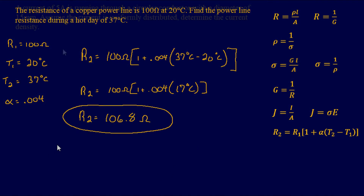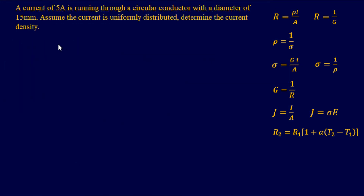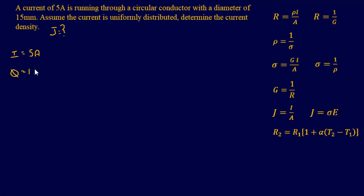For this last problem, there is a current of 5 amps flowing through a circular conductor with a diameter of 15 millimeters. Assume the current is uniformly distributed to determine the current density. We're looking for J, the current density. Writing down what we know: the current is 5 amps, and this is a circular conductor with a diameter of 15 millimeters.